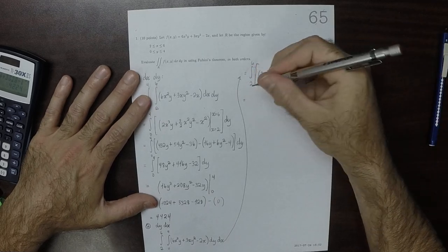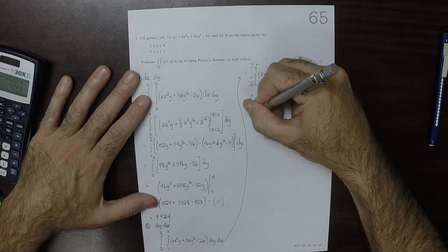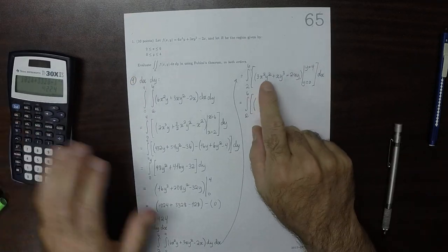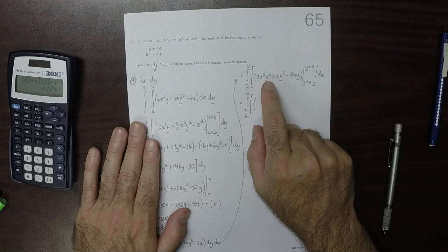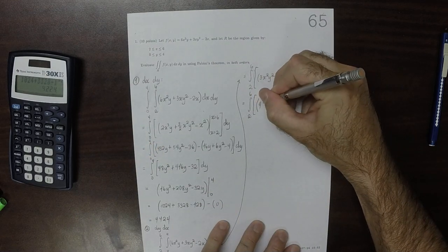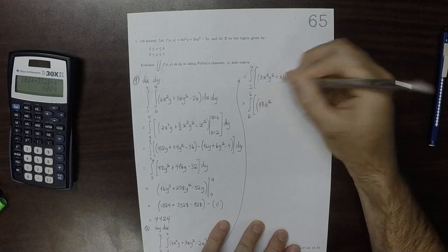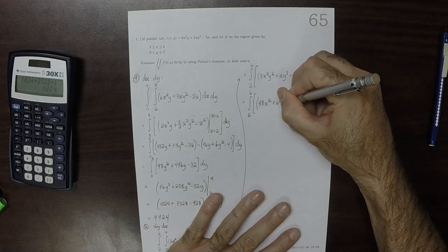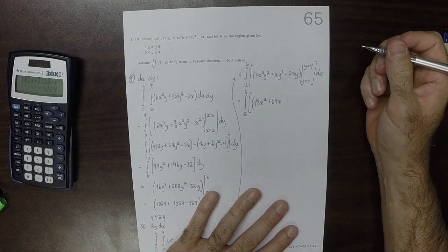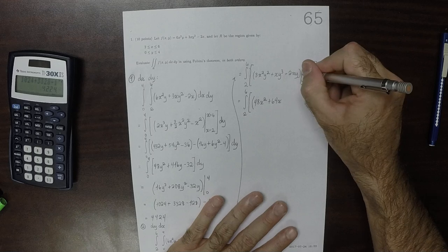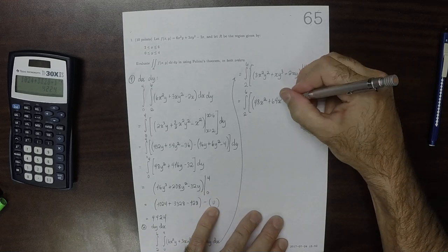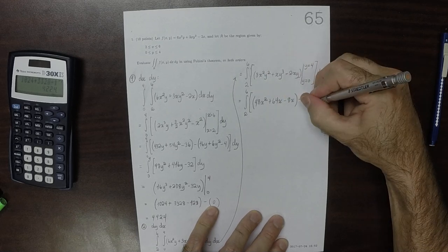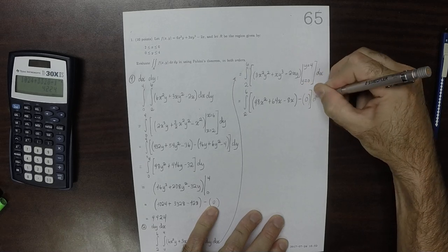It's nice that again one of the limits is 0. So if we plug in y is 4, that is 4 squared is 16 times 3 is 48, so 48 x squared, and then now plugging in y is 4 again, that would be 64x, and then minus plugging in y is 4, 8x, and then minus all that evaluated at y is 0, which is 0, dx.